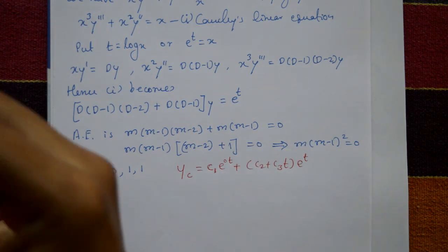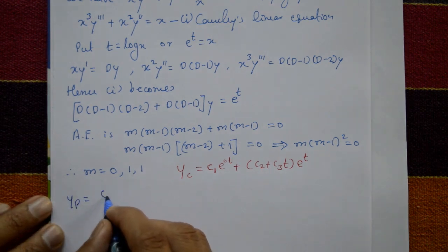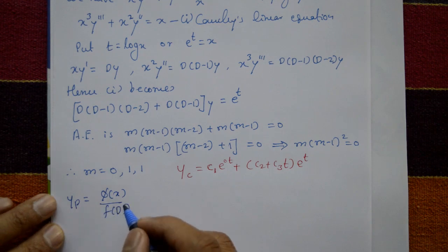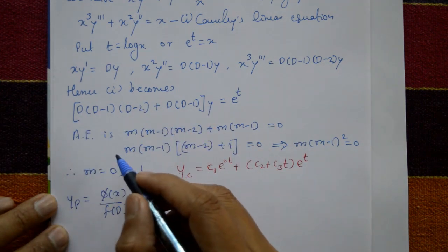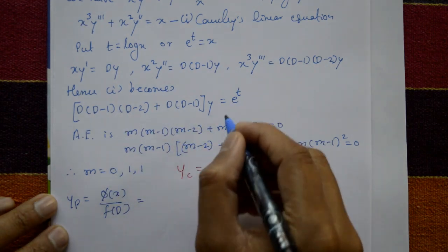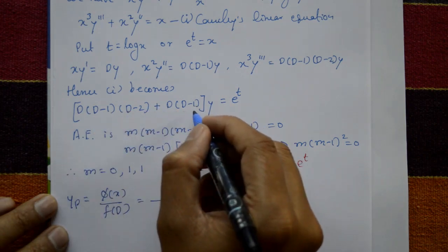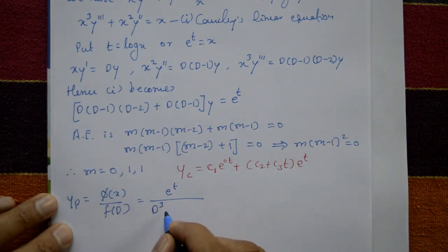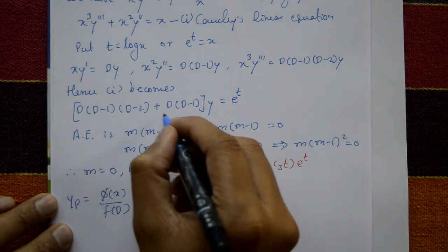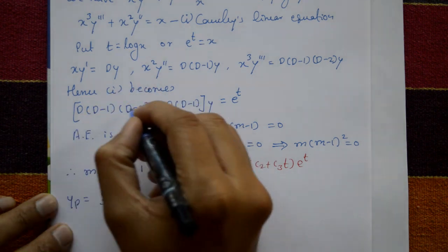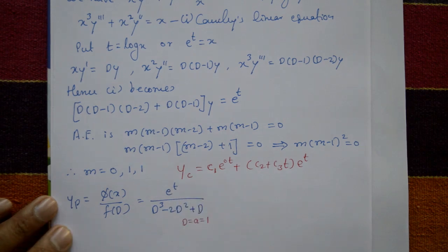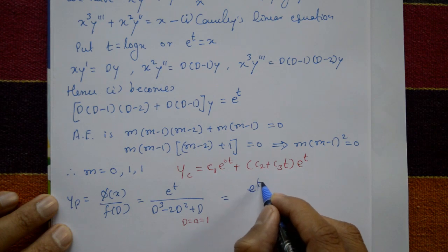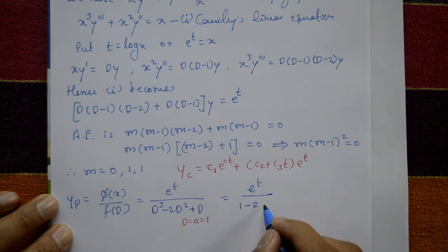For the particular integral, yp = φ(x)/f(D) = e^t / f(D). Expanding f(D) = D(D−1)(D−2) + D(D−1), we open the bracket and get D³ − 2D² + D. Since substituting D = 1 (because φ(x) = e^t, so a = 1) gives 1 − 2 + 1 = 0, the denominator is zero.